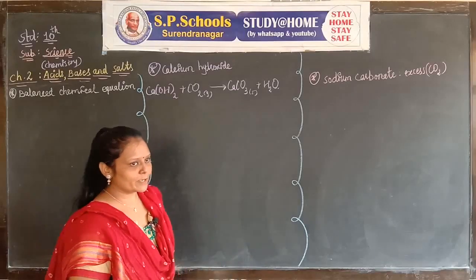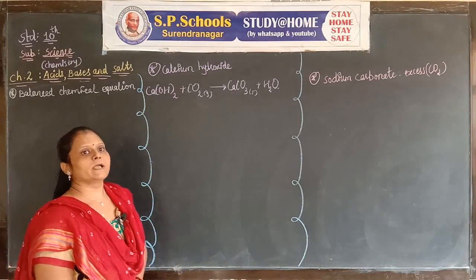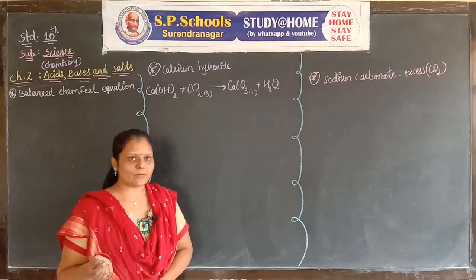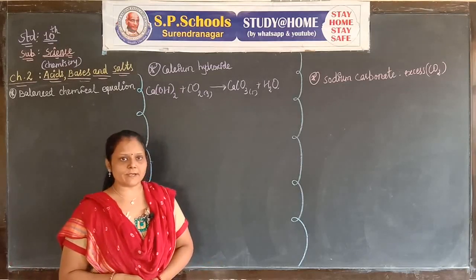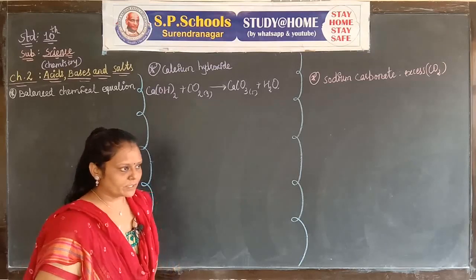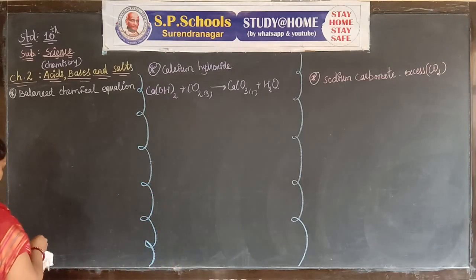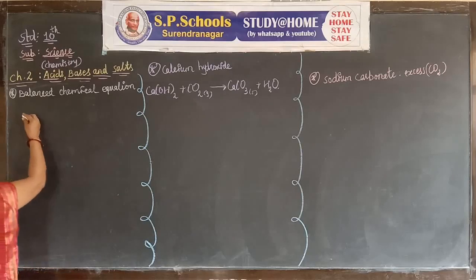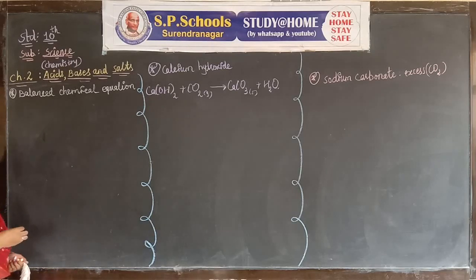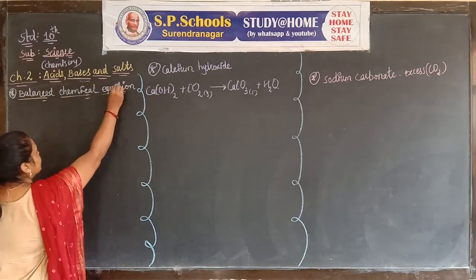In chapter two, Acids, Bases and Salts, we take an activity from the last session: forming word equations. When metal carbonate or metal hydrogen carbonate reacts with acid, it forms salt plus carbon dioxide plus water. Now we write the balanced chemical equation when metal carbonate reacts with dilute hydrochloric acid.